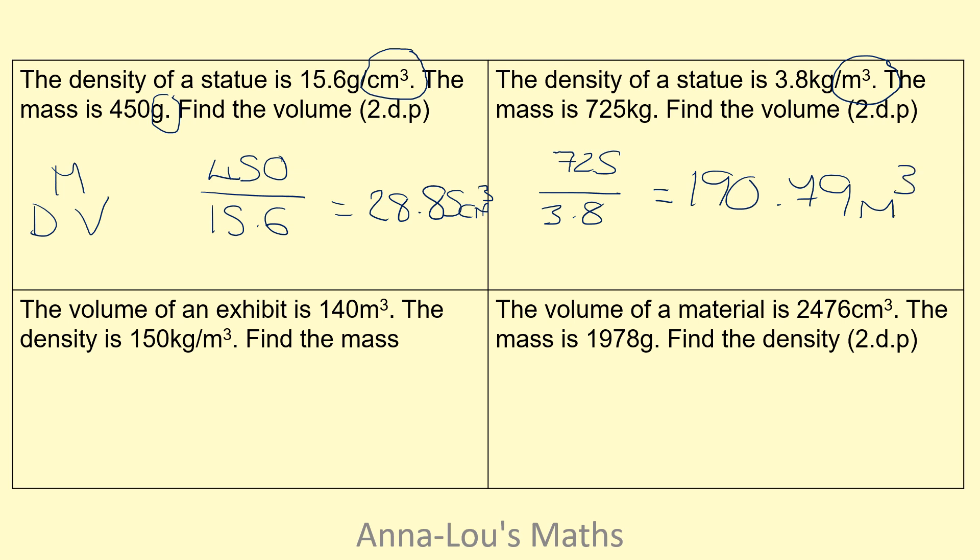The volume of an exhibit is 140 meters cubed. The density is 150 kilograms per meters cubed. Find the mass. So this time I'm looking for mass, so it's density multiplied by volume. My density is 150, my volume is 140. So if I multiply them together, I get 21,000 kilograms. I know it's kilograms because it tells me it's kilograms per meters cubed.